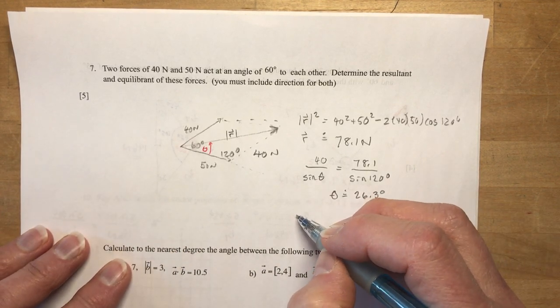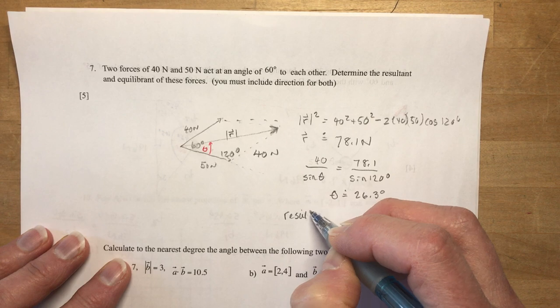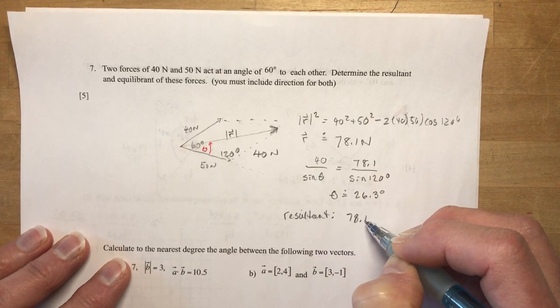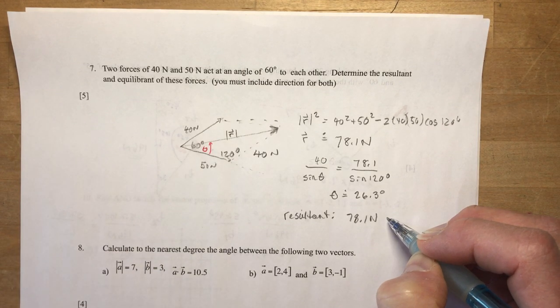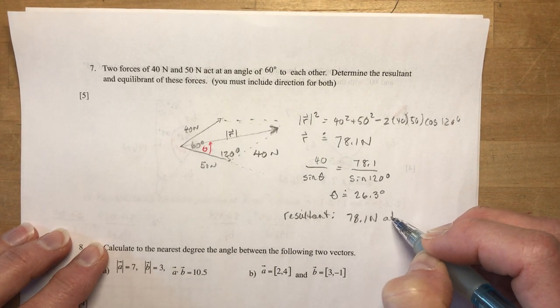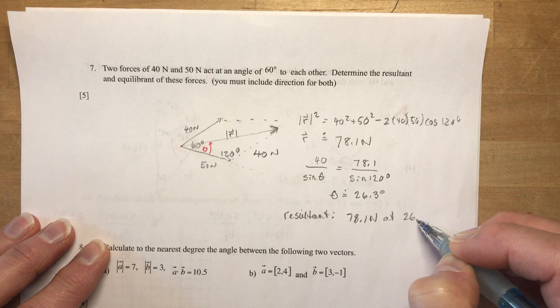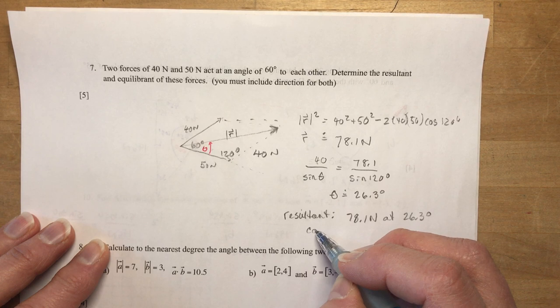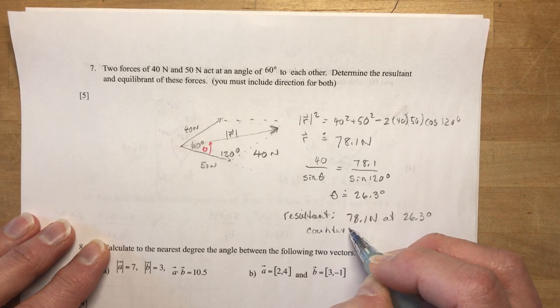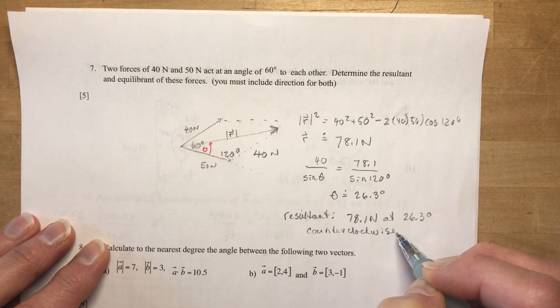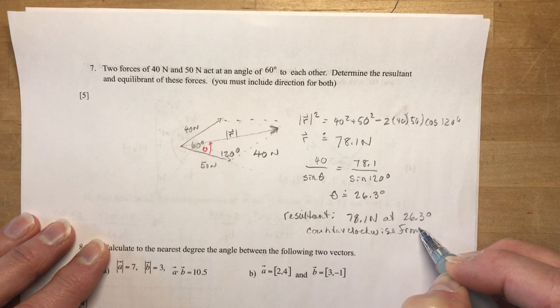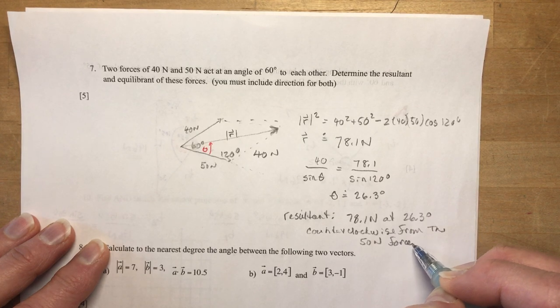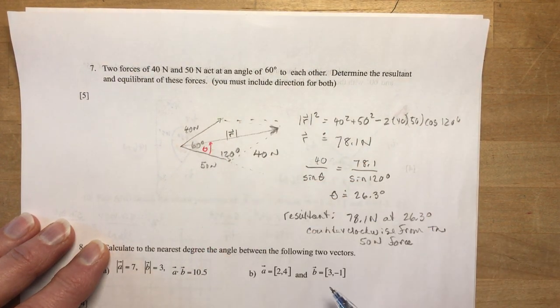Okay, so the resultant, I guess I could have put R too, the resultant is 78.1 newtons. And now you need to give direction. So I'm going to say at 26.3 degrees, this way is going counterclockwise, counterclockwise from the 50 newton force. Okay, so you have to give which way you're turning.